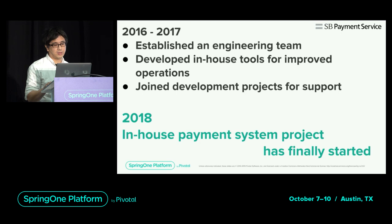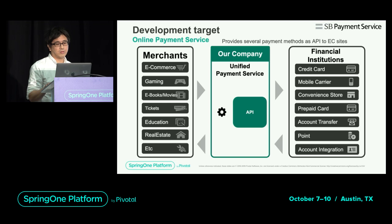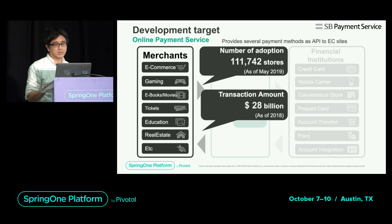In 2018, we started working on the in-house payment system. The system to be deployed was an online payment service providing various payment methods for e-commerce sites — providing a payment API for shopping sites called Merchants. The number of Merchants introduced is about 110,000, handling about 3 trillion yen in payments, that's about 28 billion dollars.